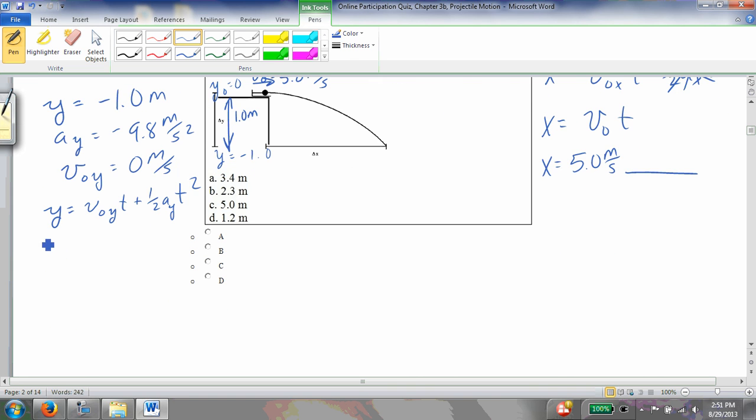And let's see, I'm looking for t. Fortunately, v_not_y cancels out, because v_not_y is equal to 0, so this whole term goes away. That's fortunate, because that means I don't have to use a quadratic formula, which I wouldn't make you do anyway. So it's negative 1.0 meters equals one-half of minus 9.8 times t squared.